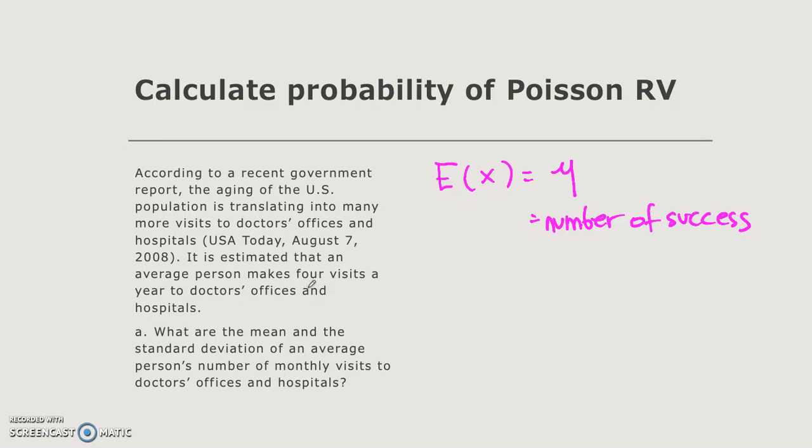It is mentioned here that the average person makes four visits a year, and what is asked is number of monthly visits. So here we know that the mean for 12 months is equal to 4. So the mean for one month is just 4 divided by 12, one-third or equal to 0.333. The average person's number of monthly visits is 0.333.